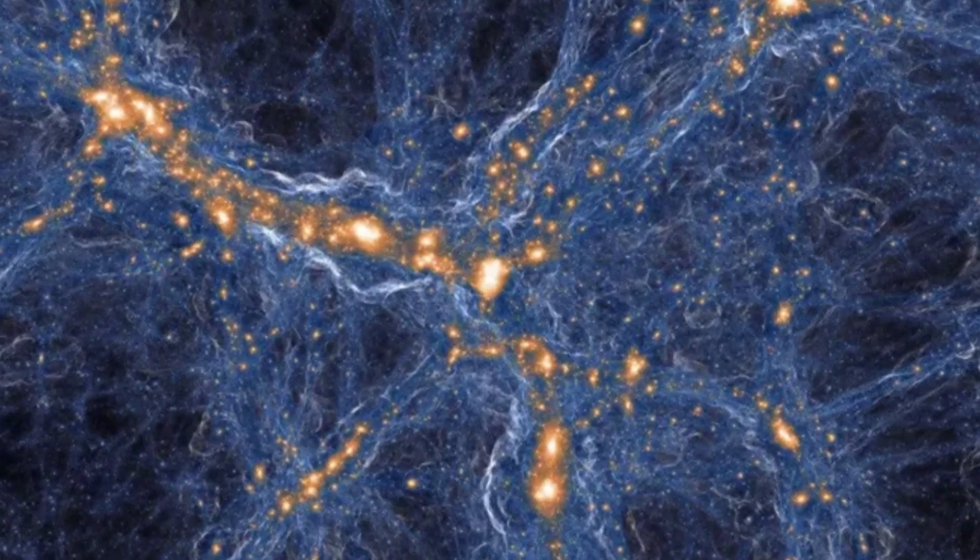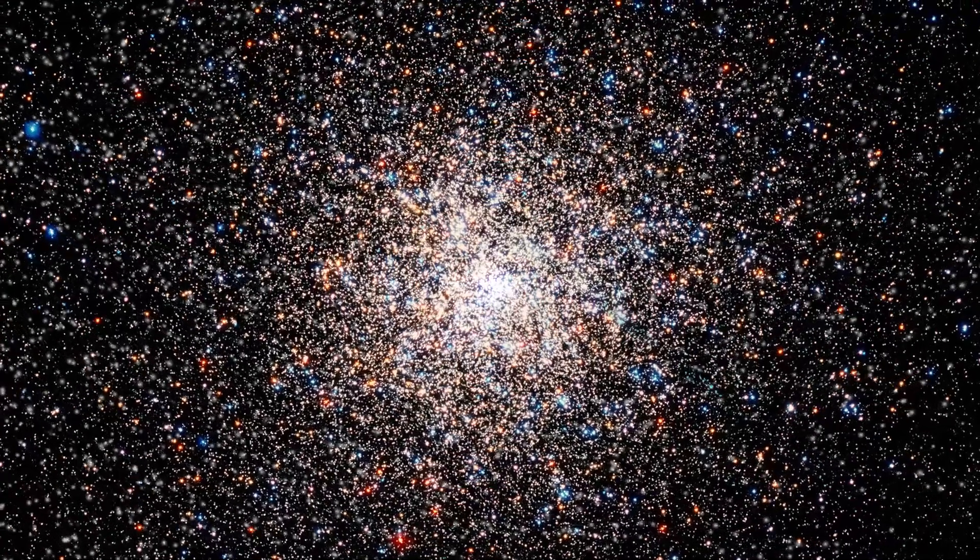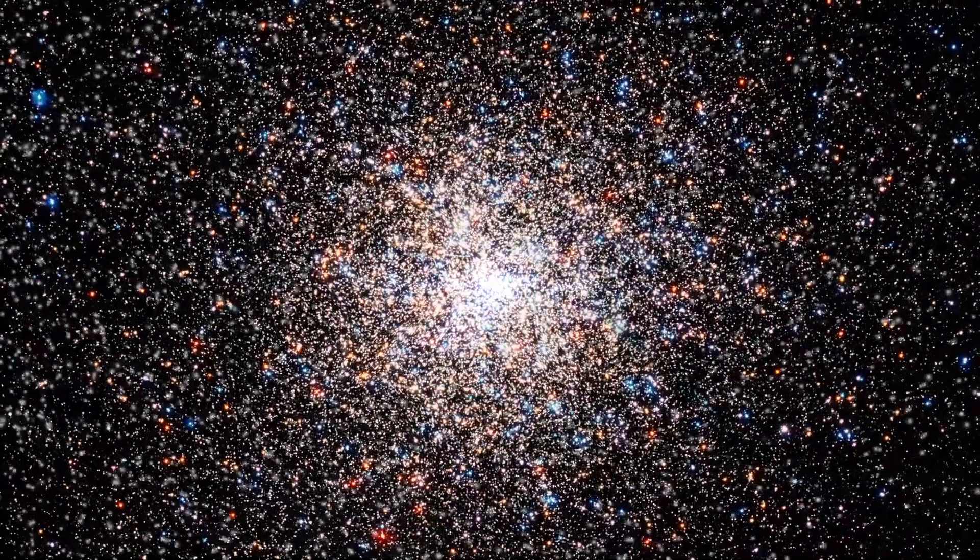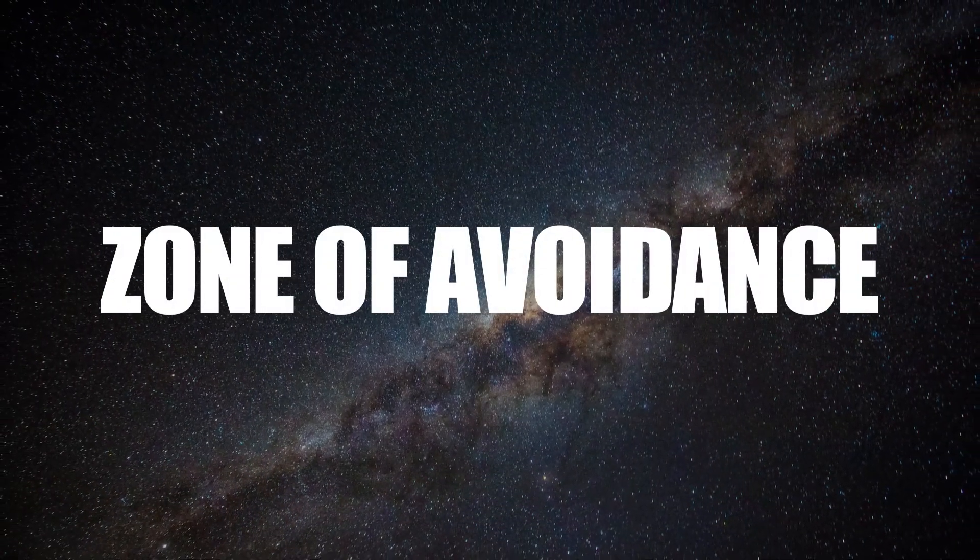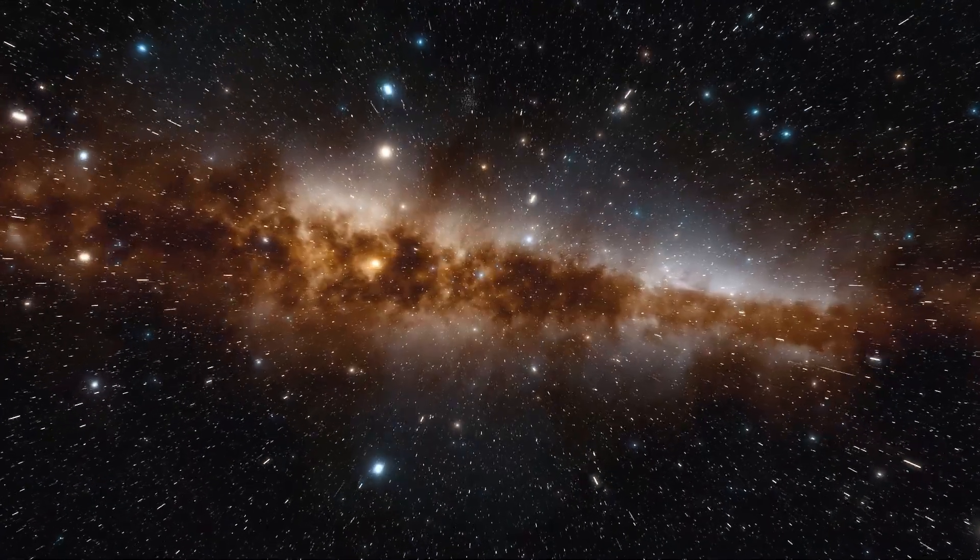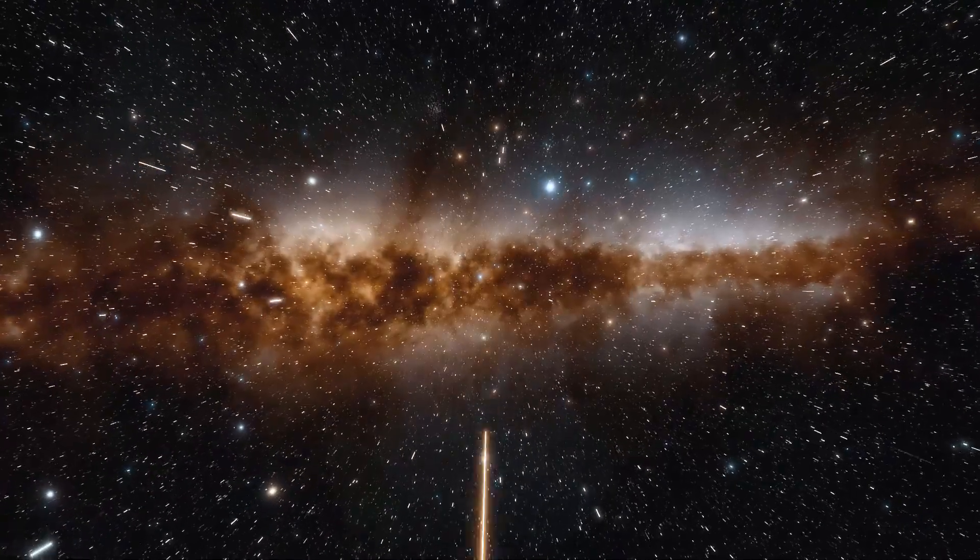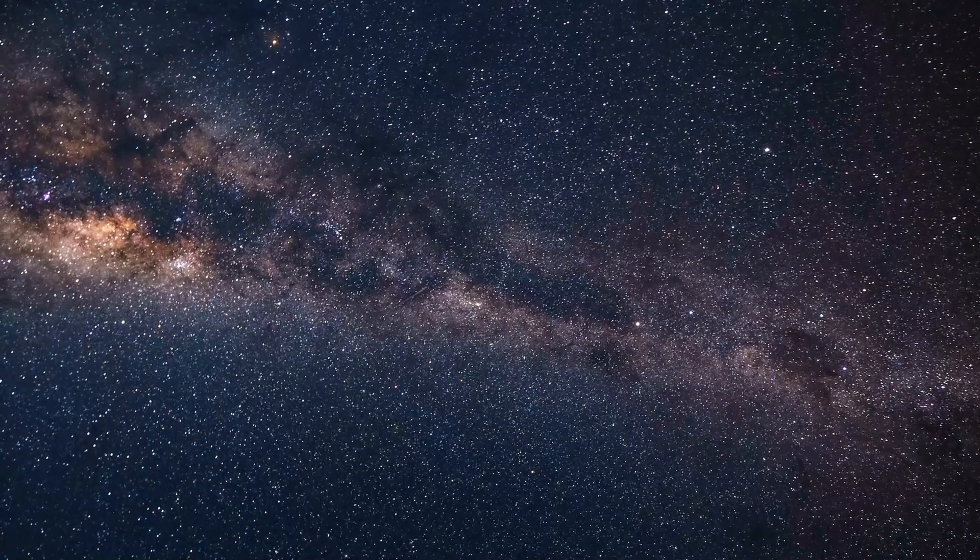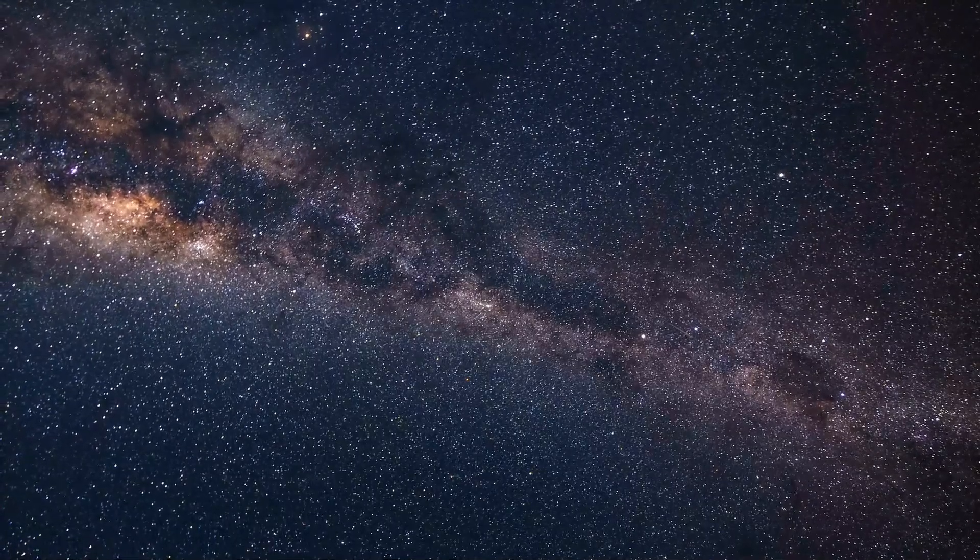The Great Attractor is very challenging to observe as it lies in a region of the sky that is obscured by the dust and stars of the Milky Way. This region is called the zone of avoidance. It makes it very challenging for us to peer through this cosmic veil and observe the Great Attractor in visible light, as the light from distant galaxies is either blocked or absorbed by the intervening matter.